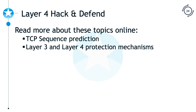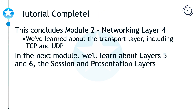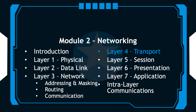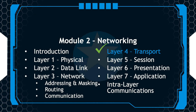We've got a couple of hack-and-defend resources for you. Check out the notes for articles on TCP sequence prediction — you'll learn why it's important to use random sequence numbers — and Layer 3 and Layer 4 protection mechanisms. This completes Session 6, Layer 4. Next time, we are going to discuss Layer 5, the session layer, and Layer 6, the presentation layer. Until next time.